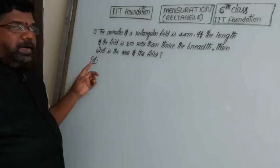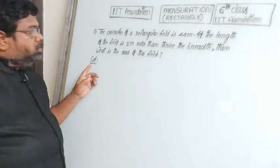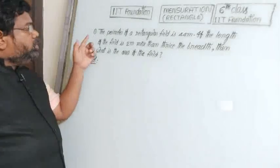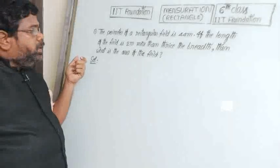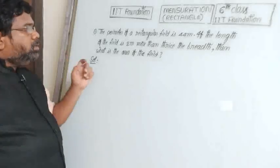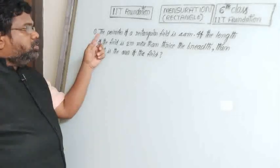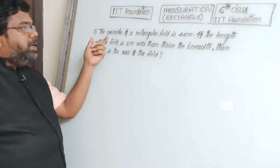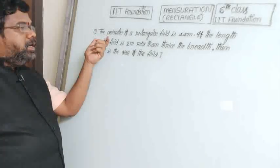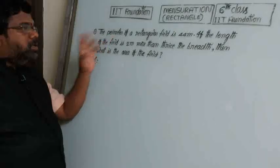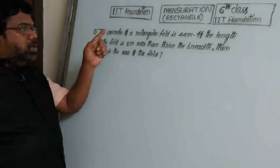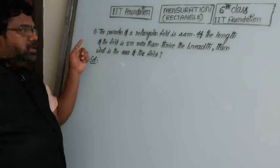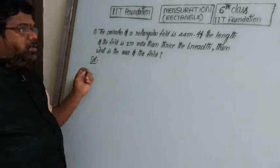Continuation of the last video on rectangles. So here question number 1: the perimeter of a rectangular field is 44 meters.